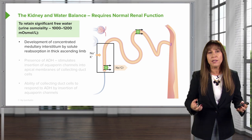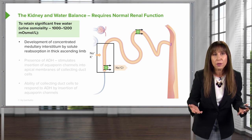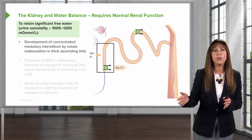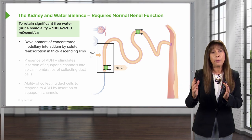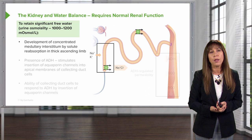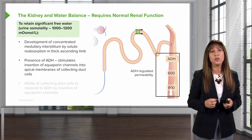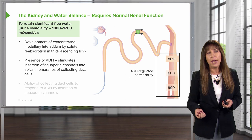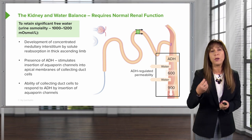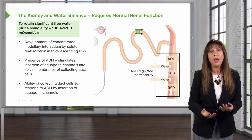What if we want to retain significant free water? We can actually do that by concentrating our urine osmolality to as high as 1,000 or 1,200 milliosmoles per liter. We do this by developing a concentrated medullary interstitium through solute reabsorption in the thick ascending limb. That diluting segment has to be intact to generate that concentrated medullary interstitium. We also need ADH to be released and present to stimulate the insertion of aquaporin channels into the apical membranes of our collecting duct cells. Not only does ADH have to be present, but the ability of the collecting duct cells to respond by inserting those aquaporin channels has to be intact as well. These three things are critical to generate a very concentrated urine.